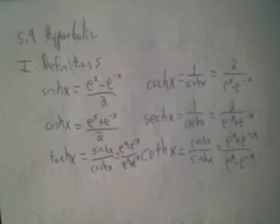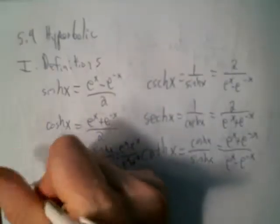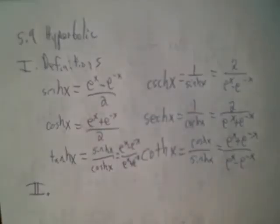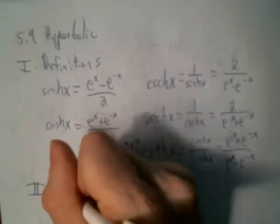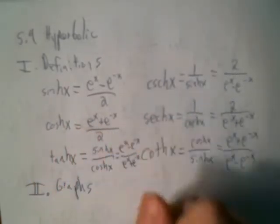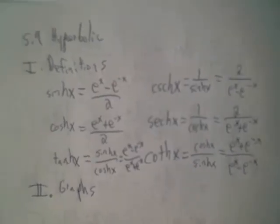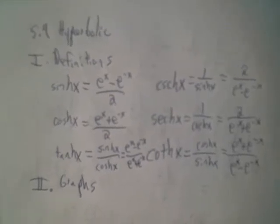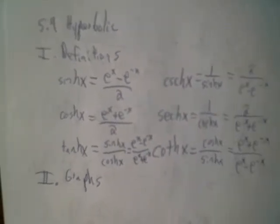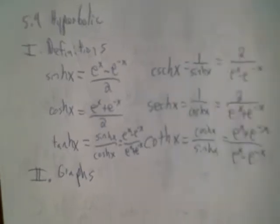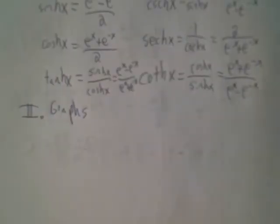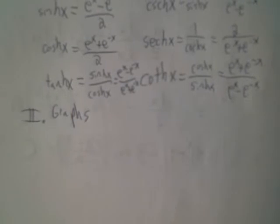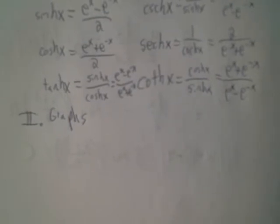The graphs of these — you should be able to intuitively determine some of them. In particular, hyperbolic cosine: the upside-down version of cosh is the Arch of St. Louis. The Arch of St. Louis is not a parabola — it's actually a hyperbolic function.